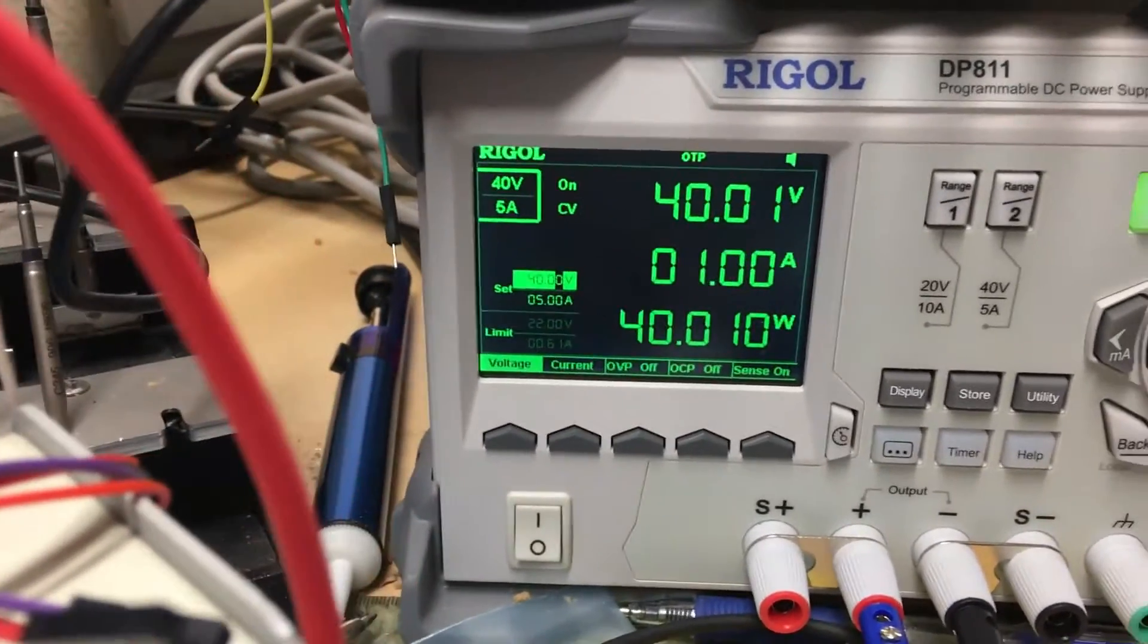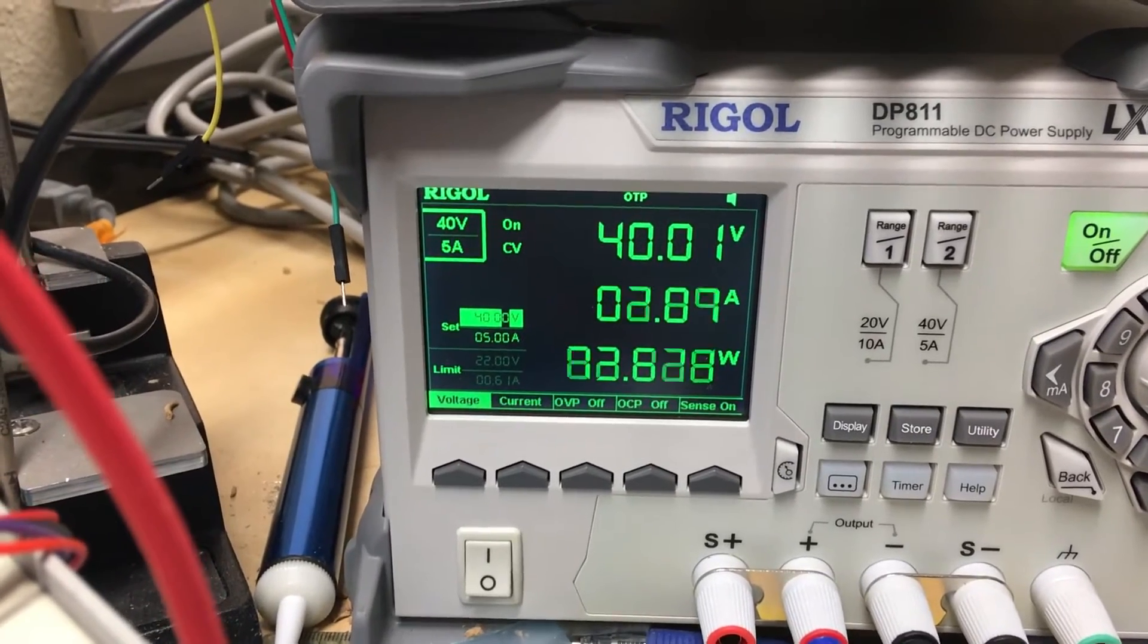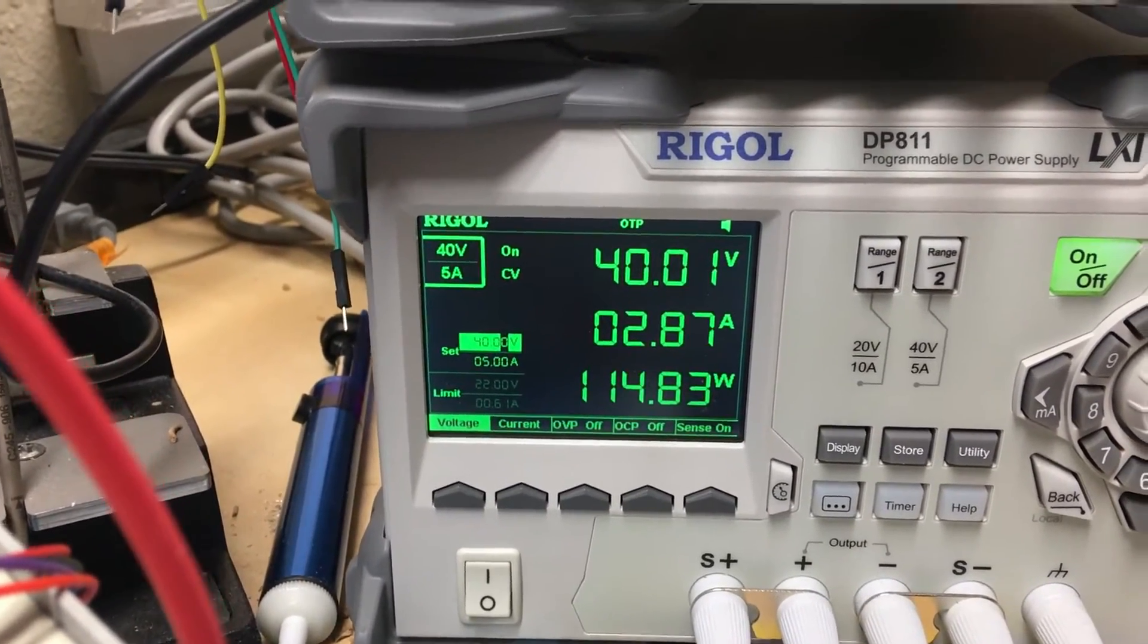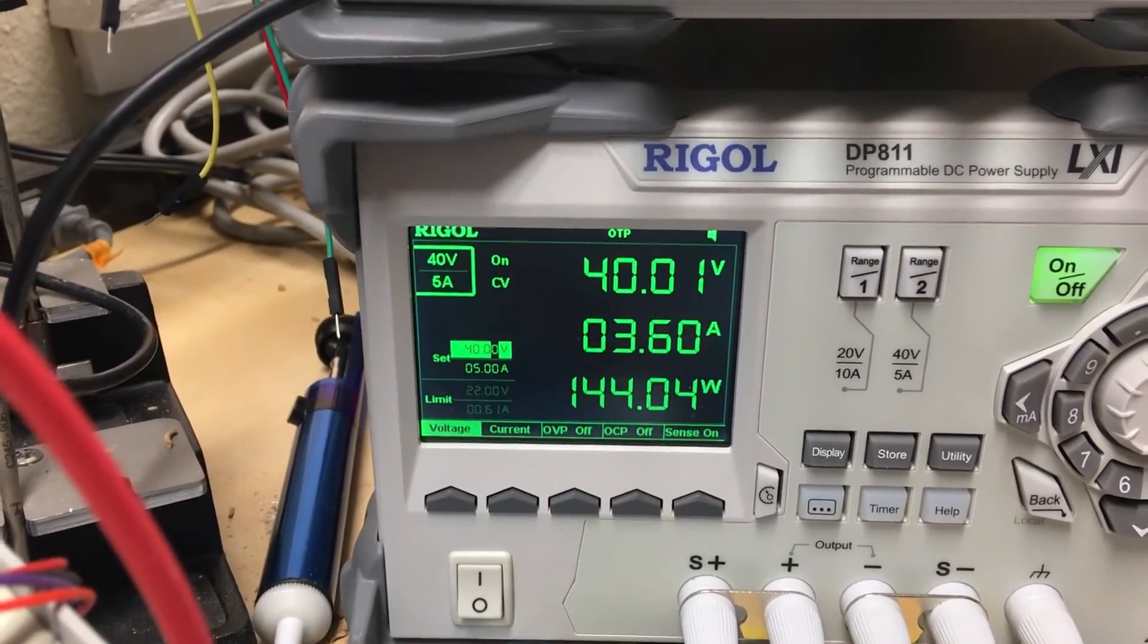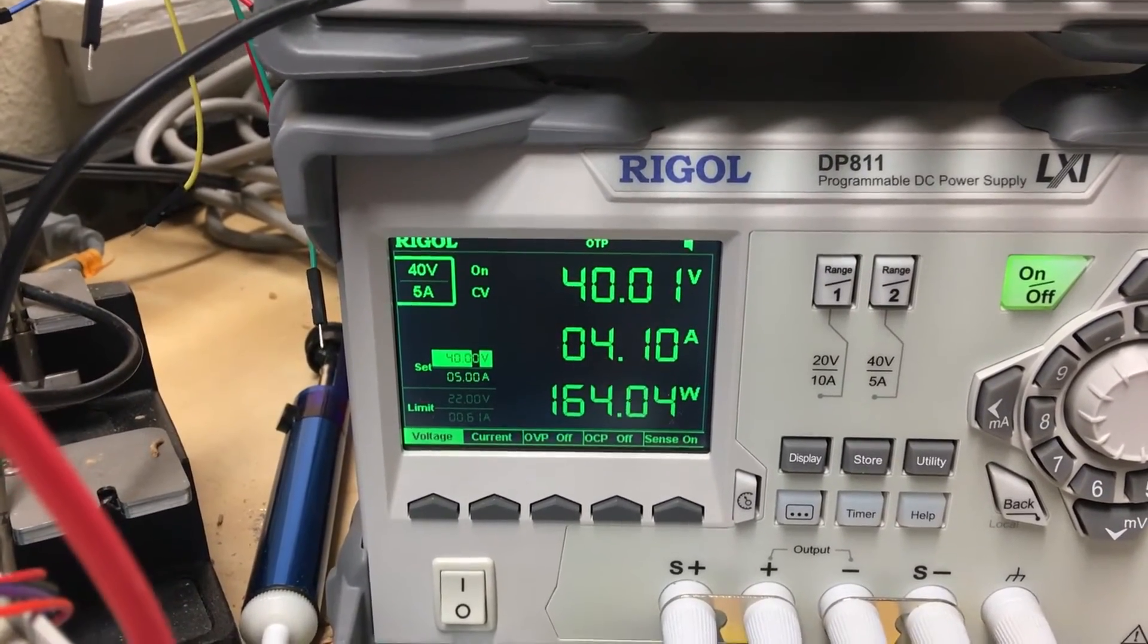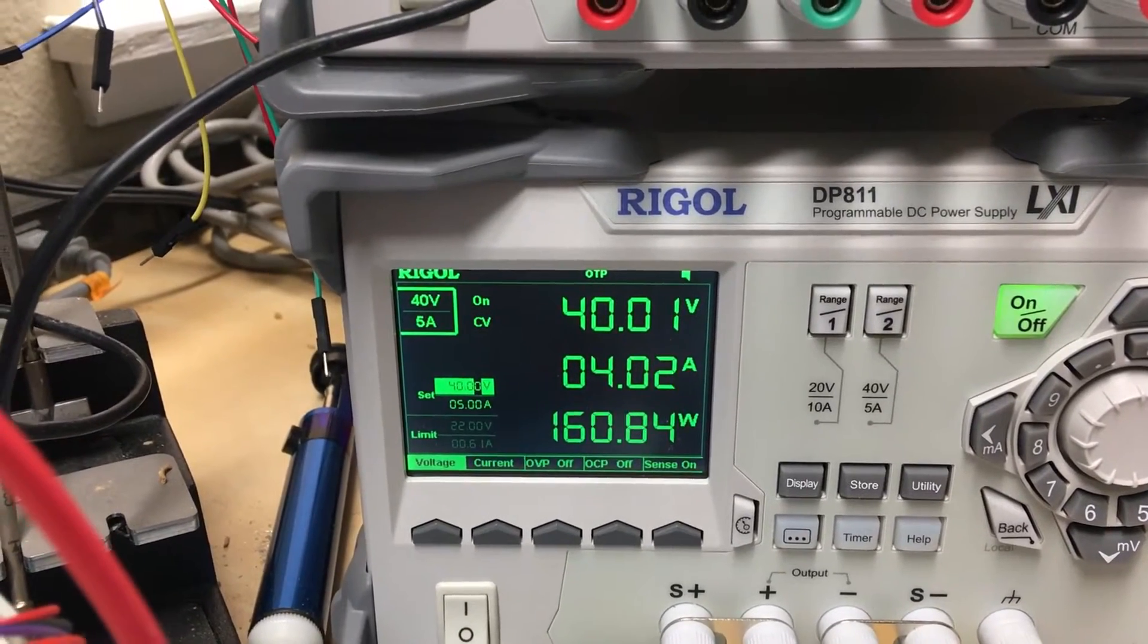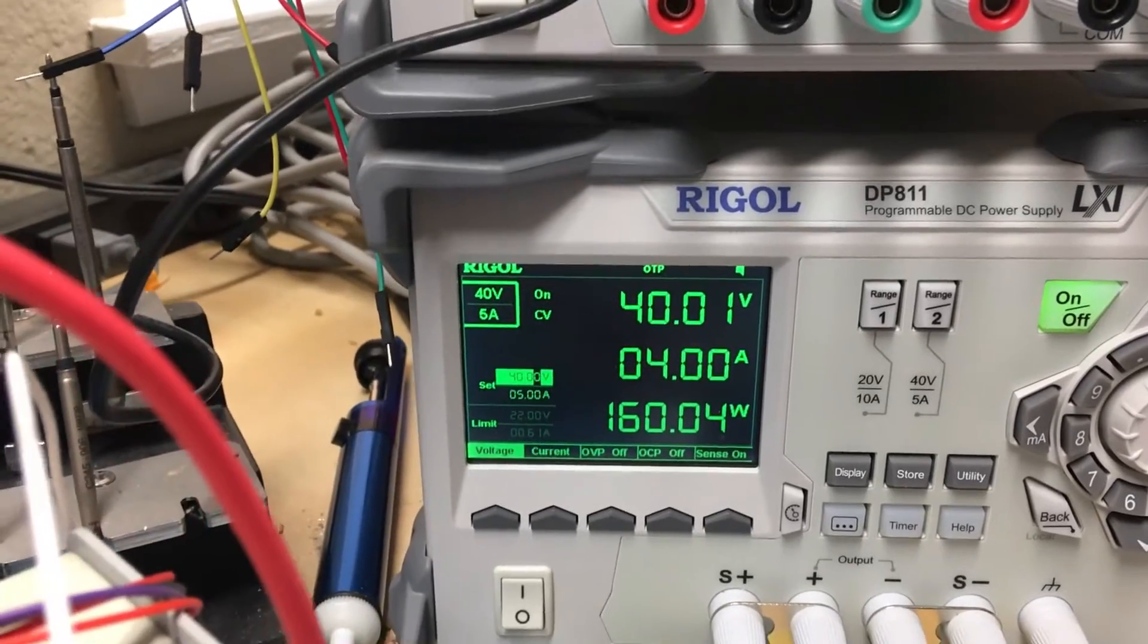I'm going to go ahead now and bring it up to 4 amps. On the bottom digits on the power supply, you can see the amount of energy, the number of watts being dissipated. You can see it quickly coming up, get it as close as I can to 4 amps. That shows exactly 4 amps being pulled.